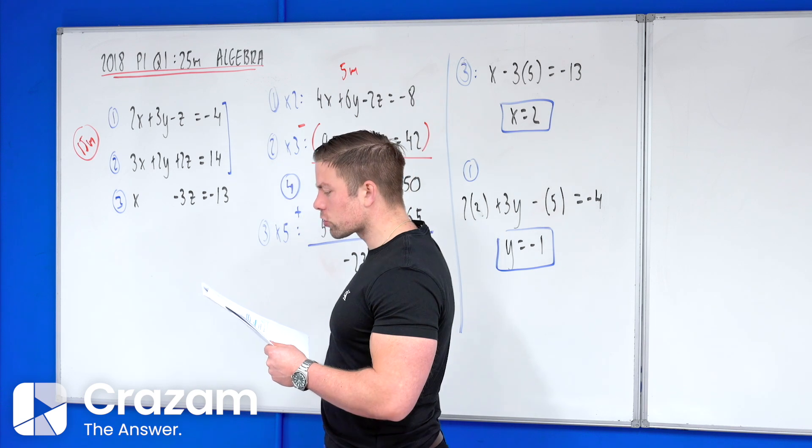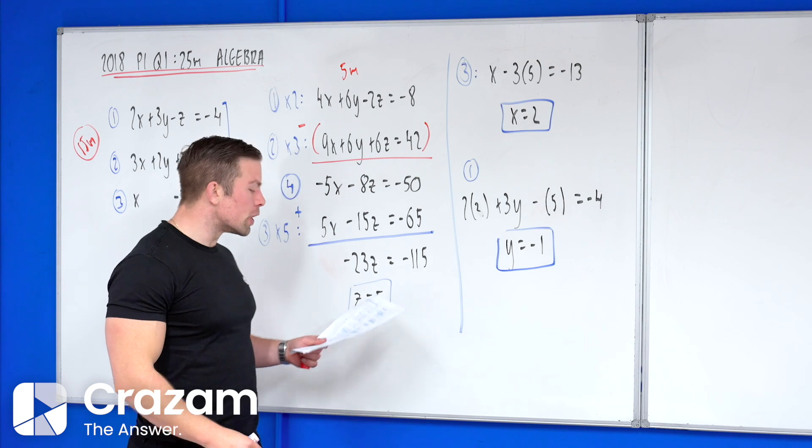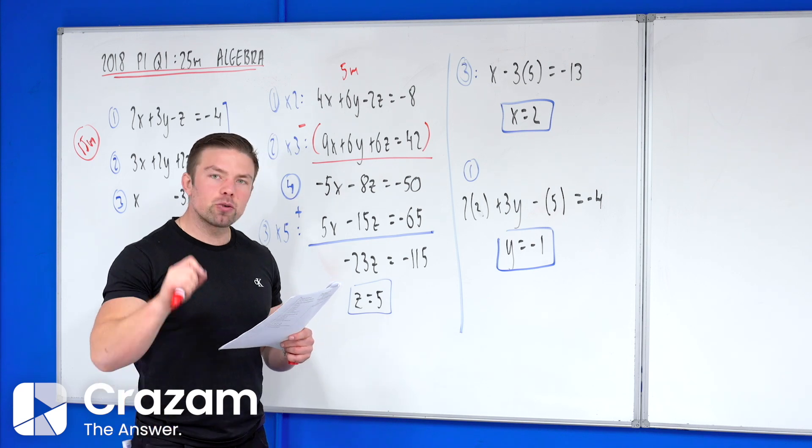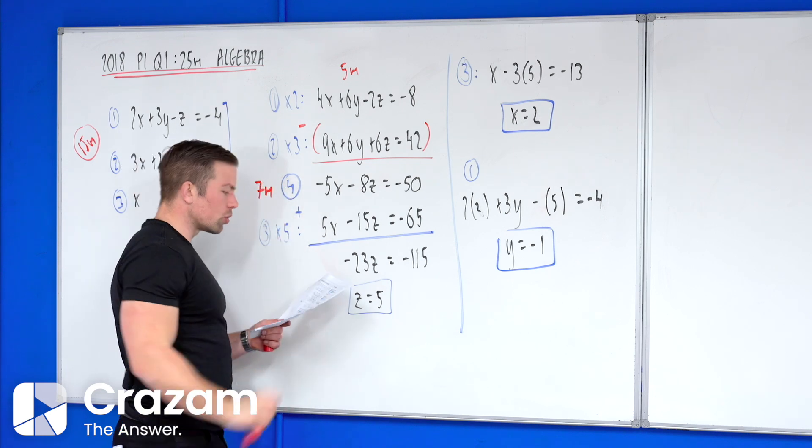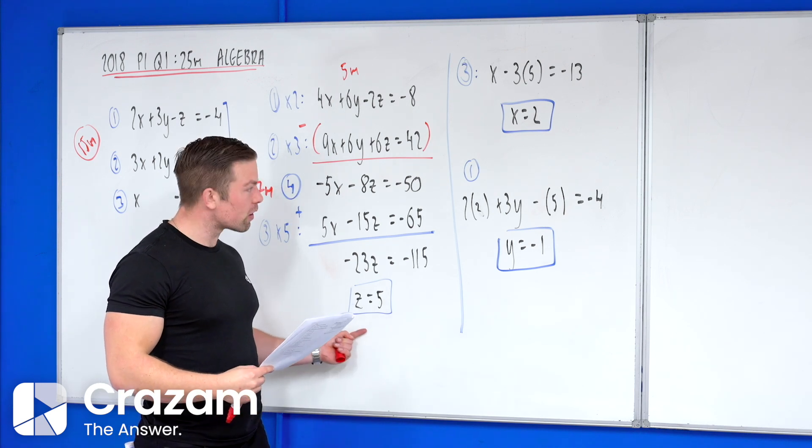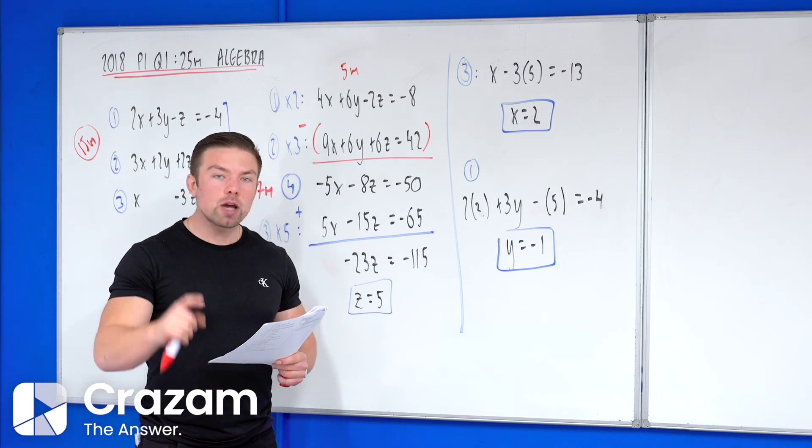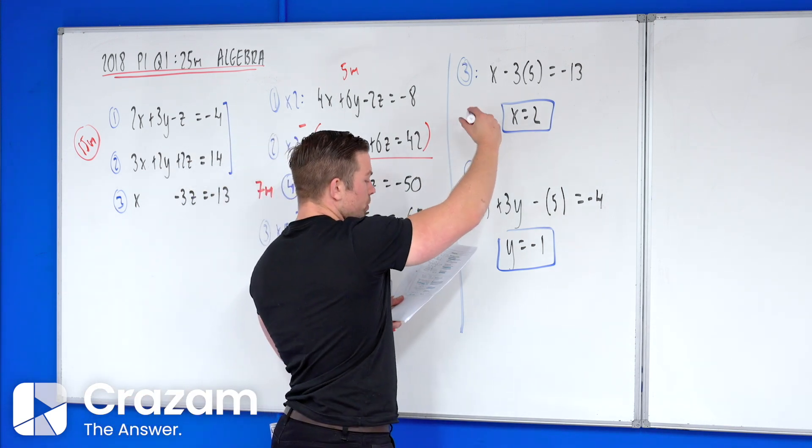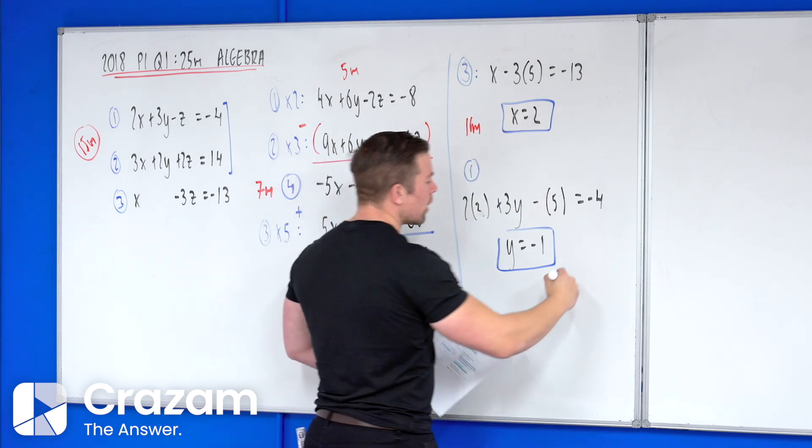Your mid partial credit would be if you found one unknown with errors, so if you got one of these but had errors that gave you seven marks. If you successfully eliminated one unknown like we have done here, that brought you the seven marks as well. Or if you just found one unknown and stopped, you would still be on seven marks. Your high partial credit came from finding two unknowns, so in this case z and x, that brought us up to the 11 marks. And to get the full 15 we had to have all three unknowns correctly found.